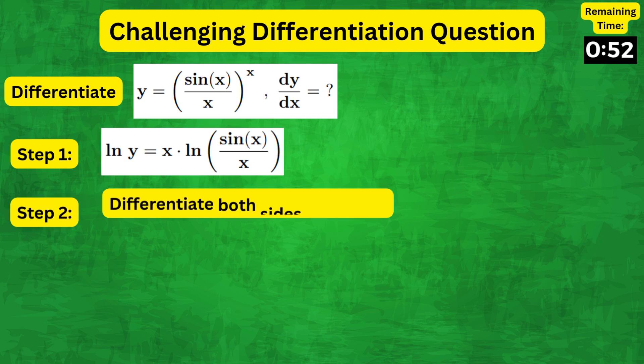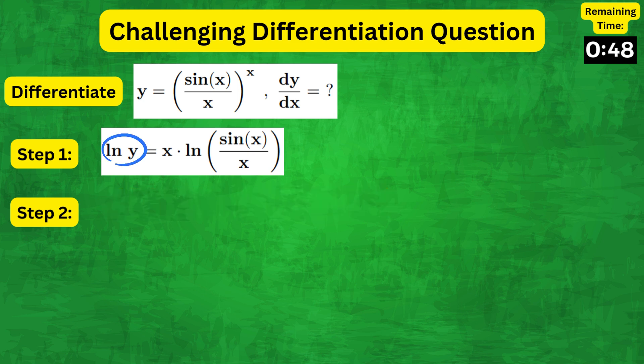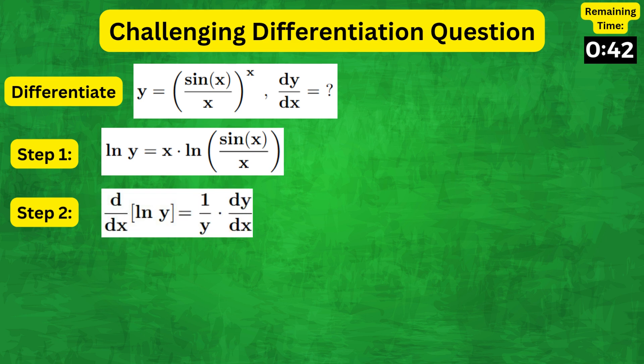And now we can differentiate both sides implicitly. For the left-hand side, noting that y is a function of x, we get 1 over y dy by dx.